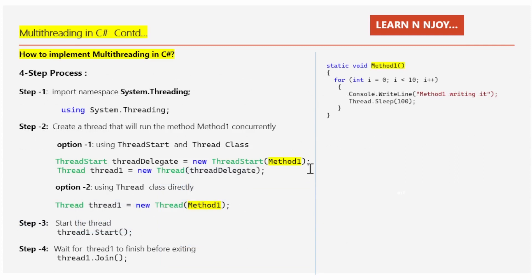Now let's talk about how to implement multi-threading in C#. It's just a four-step process. Step one: we need to import the namespace System.Threading by writing 'using System.Threading'. Step two: we need to create a thread that will run method one concurrently. We have two options. Option one — use ThreadStart and the Thread class. First, create an instance of the ThreadStart class: write 'ThreadStart threadDelegate = new ThreadStart(methodOne)', passing the name of the method we plan to execute with the thread.